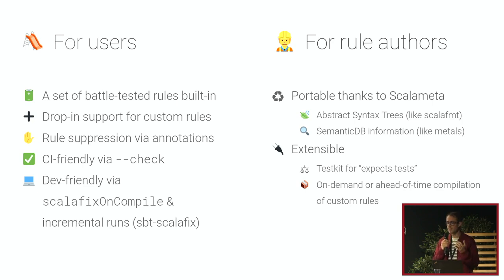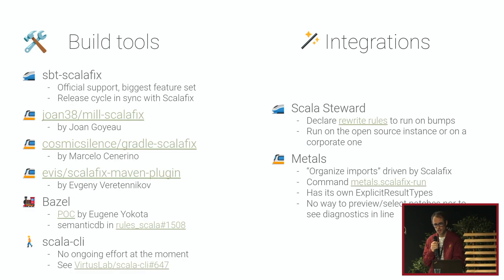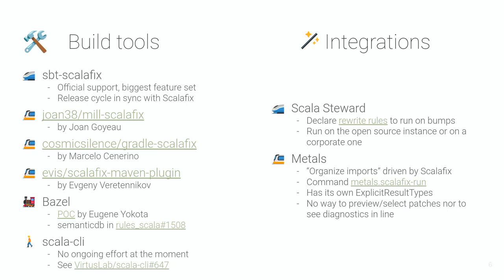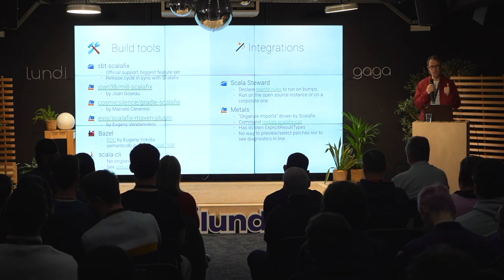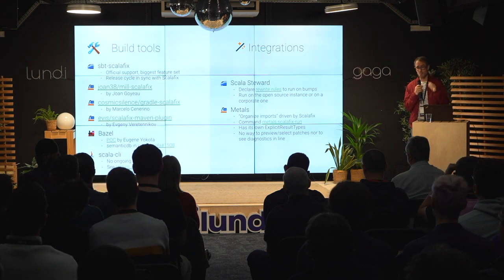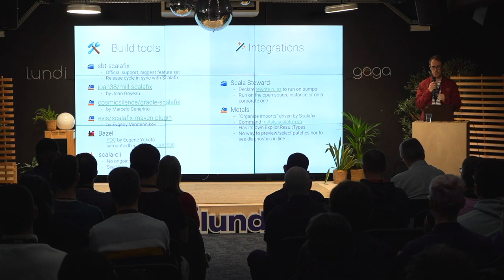It's also extensible with a lot of tooling to make it easy to write custom rules. Regarding ecosystem integration, it's a mature project — eight years old — with most integrations you can think of: SBT is the most powerful integration, and there are community-driven plugins for Mill, Gradle, and even Maven. Bazel is still ongoing, with a lot of work from Eugene Yokota, the SBT maintainer.